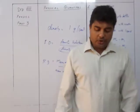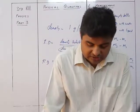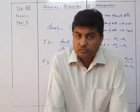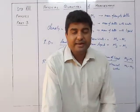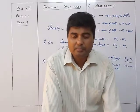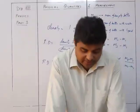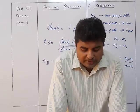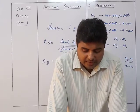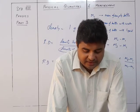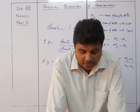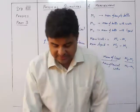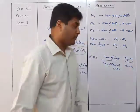The density bottle measures the relative density of a liquid. Since the density of water is 1 gram per centimeter cube, the density of a substance in gram per centimeter cube is numerically equal to the relative density of the substance. This is the most important part.